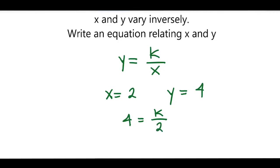To solve for k, I will multiply both sides by 2. These 2's cancel out, and so we see here that 8 equals k. Now I will take this value for 8 and plug it in for k into our inverse variation model.